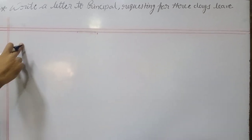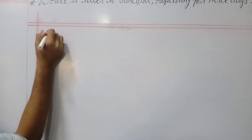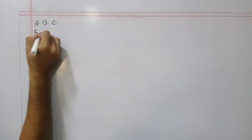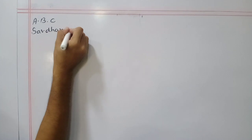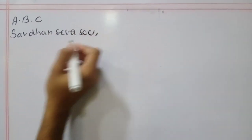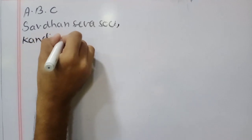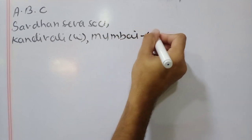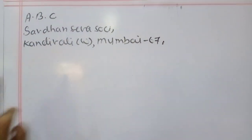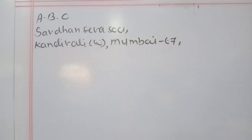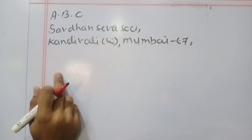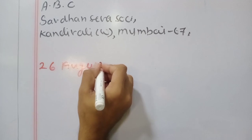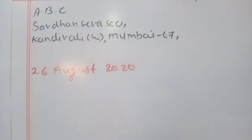The first step — sender's detail. We cannot write our real name in the exam, so we have to use A, B, C as the name and address. So A, B, C, Kandivali — we have written the name and address of the person who is writing the letter. Then leave one line. The second one is date: today is 26th August 2020 — we have written the date.